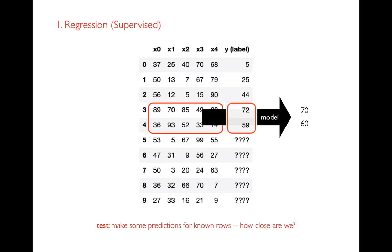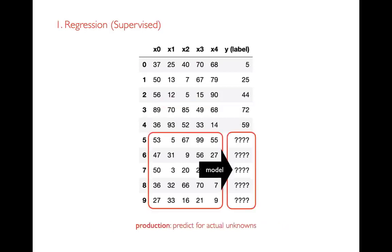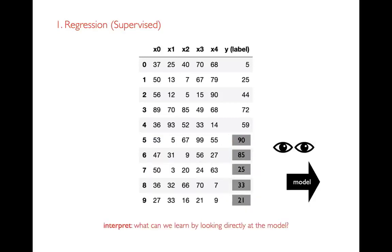After learning the model and evaluating it on known cases, I put it into production — using it for real things to predict actual unknowns, like what a new house might sell for. Beyond predictions, I might look at the model to learn things about the world. For example, for each additional bedroom or bathroom, how much does that increase house value? That could inform decisions like whether a housing remodel adds more value with a bathroom or a bedroom.